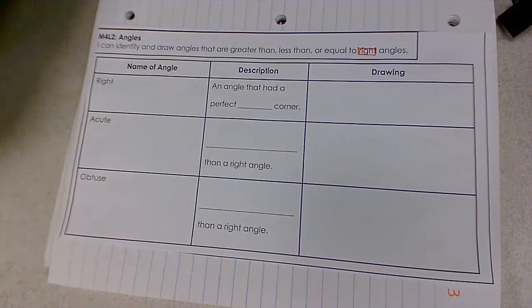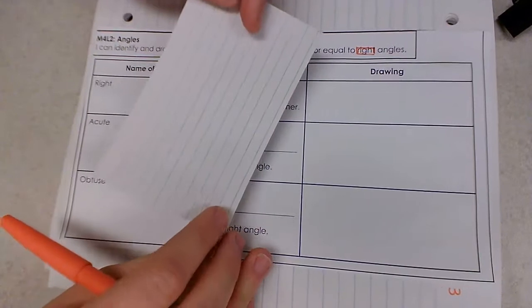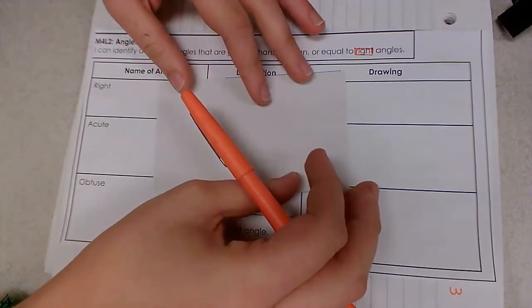To help us understand a right angle we're gonna use the tool of a note card today because on a note card we have four right angles.